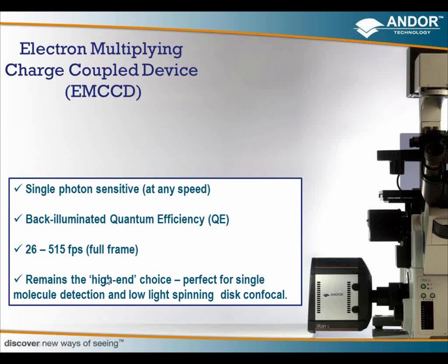These cameras remain the high-end choice and are perfect for single molecule detection and low-light spinning disc confocal. For any applications where light levels are very low, these cameras are ideal. You can multiply your signal on the camera itself without having to increase laser intensity or exposure times. Therefore you can get very sensitive acquisitions at very fast frame rates without affecting the sample, allowing imaging for much longer periods of time while still maintaining a good signal-to-noise ratio.